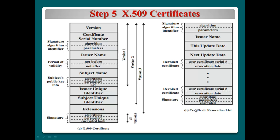If an X.509 certificate is compromised or attacked, you must revoke it. This is managed through a certificate revocation list — CRL. The list contains entries such as the user certificate serial number, the revocation date, and the serial number of the revoked certificate.